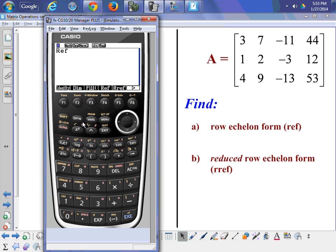So F4 for ref, then matrix alpha E, hit enter, and we get a nice-looking row echelon form.